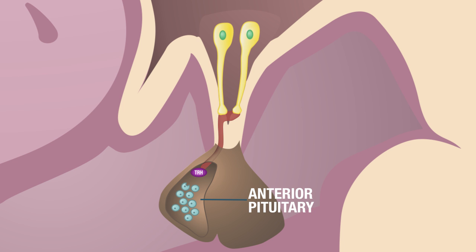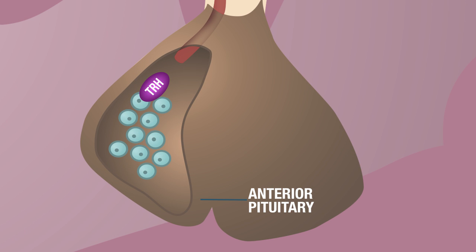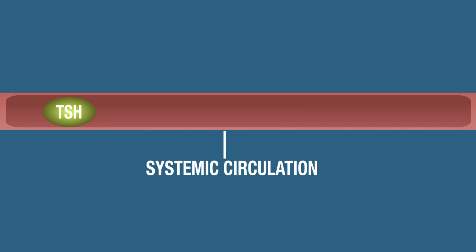Once TRH reaches the anterior pituitary, it will bind to receptors on the endocrine cells within the anterior pituitary. Once thyrotropin-releasing hormone binds to these receptors, it will stimulate the endocrine cells of the anterior pituitary to synthesize and secrete another hormone called thyroid-stimulating hormone. Once synthesized and secreted, thyroid-stimulating hormone will enter into the systemic circulation.